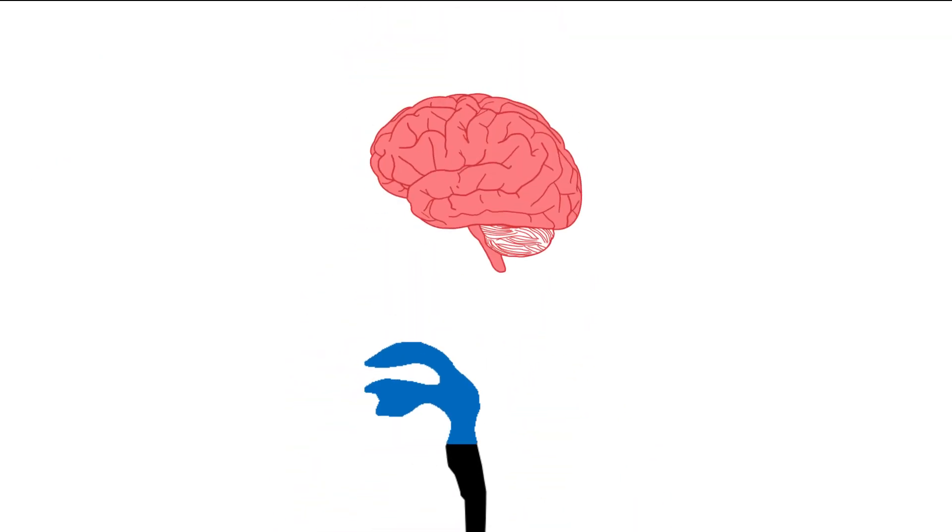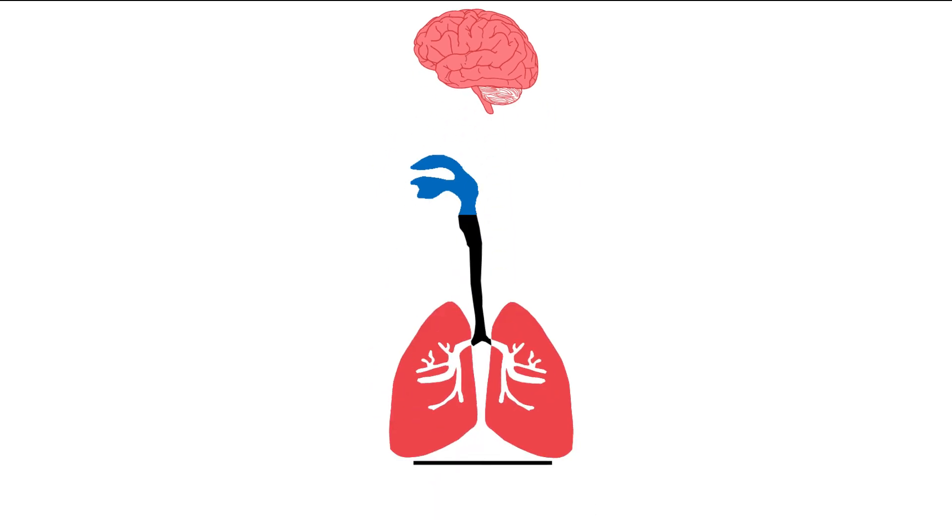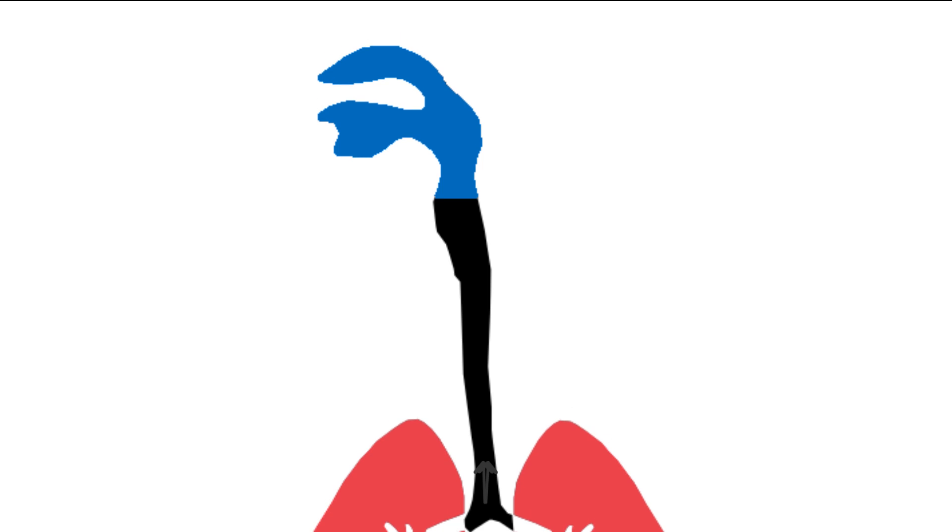Now the brain sends another signal, letting the diaphragm move up and relax, creating a small space in your chest, letting carbon dioxide move from alveoli through bronchioles up the trachea and out of your nose and mouth.